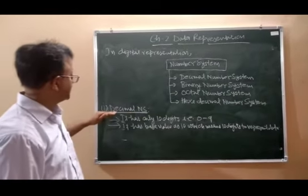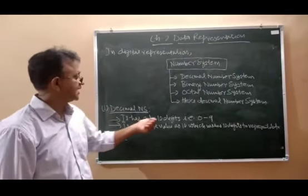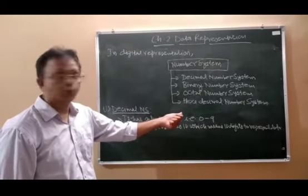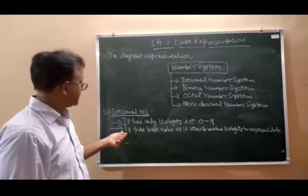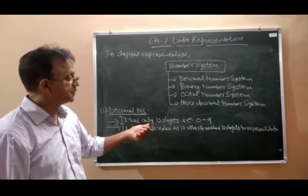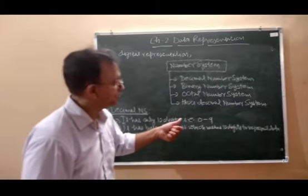First, we will take the decimal number system. It has only 10 digits, that is, from 0 to 9, and it has base value as 10, which means 10 digits to represent.